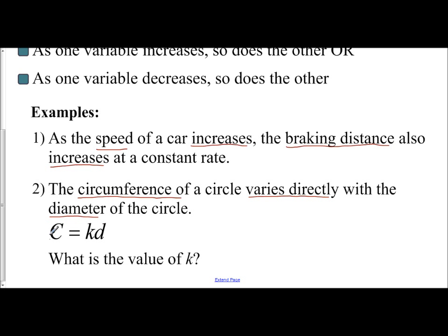We have circumference equals some constant of variation times diameter. The question is: what is that constant of variation? We know, based on our formula for circumference, it's pi itself. Circumference equals pi times diameter, so pi represents our constant. This is direct variation—one variable varies directly to the other, and as one variable increases, so will the other.